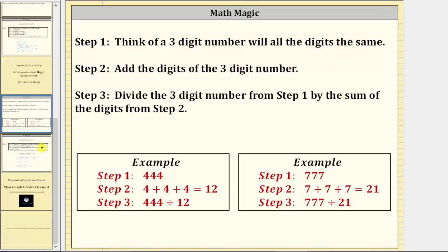To begin, step one is to think of a three-digit number with all the digits the same. Two examples would be 444 or 777.